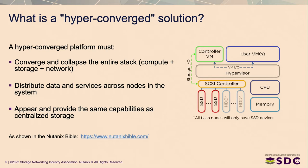This brings us to hyperconverged — really what it's trying to do is converge and collapse the entire stack: compute, storage, and network in one self-contained package. It should distribute data and services across multiple nodes in a clustered system, and appear just like a centralized NAS to any client that accesses it. This diagram from the Nutanix Bible — I recommend NutanixBible.com — shows you've got a hypervisor, disks, and a SCSI controller passed through directly to a controller VM.